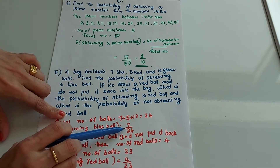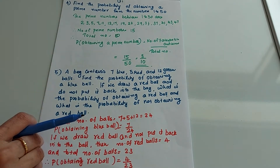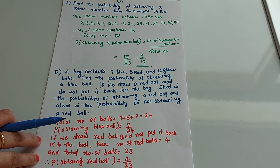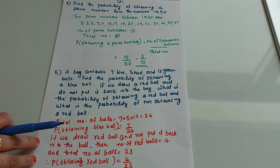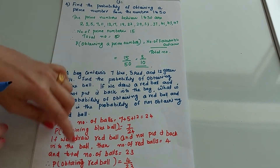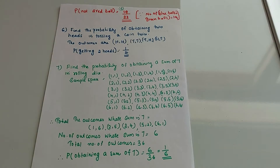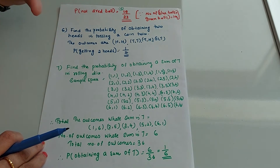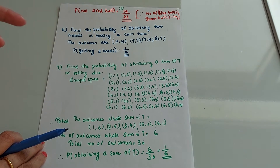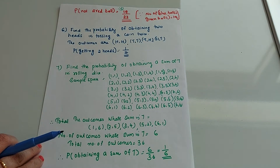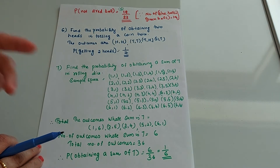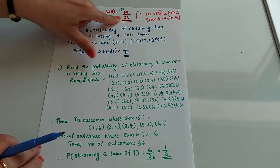If you draw a red ball and do not put it back, the total number of balls is now 23. There were 5 red balls but we took one out, so there are 4 red balls remaining. Probability of obtaining a red ball equals 4 by 23. Probability of not obtaining a red ball: there are 19 blue and green balls out of 23, so it equals 19 by 23.